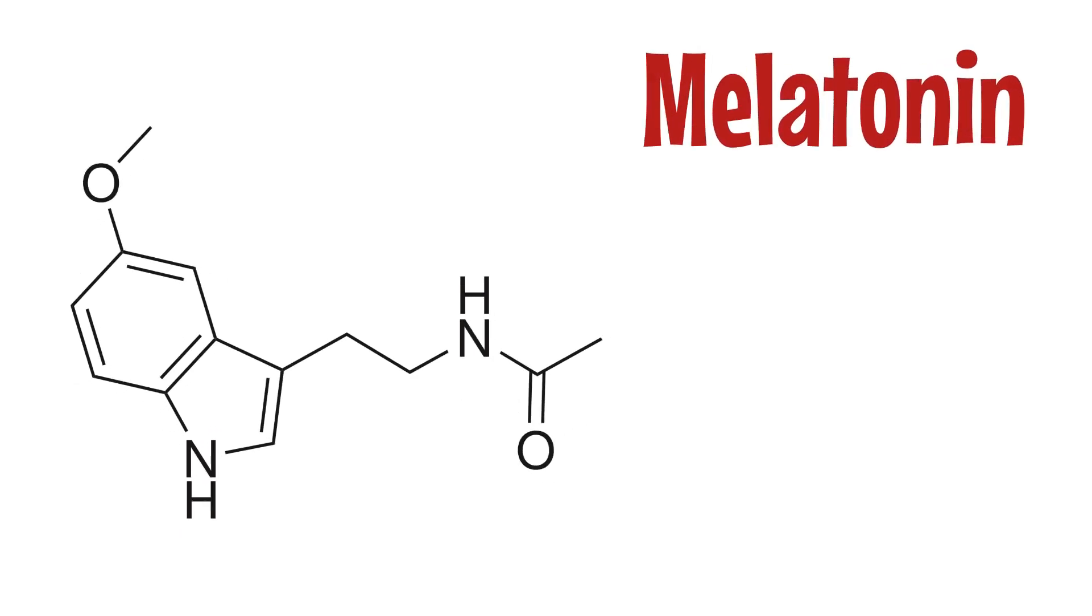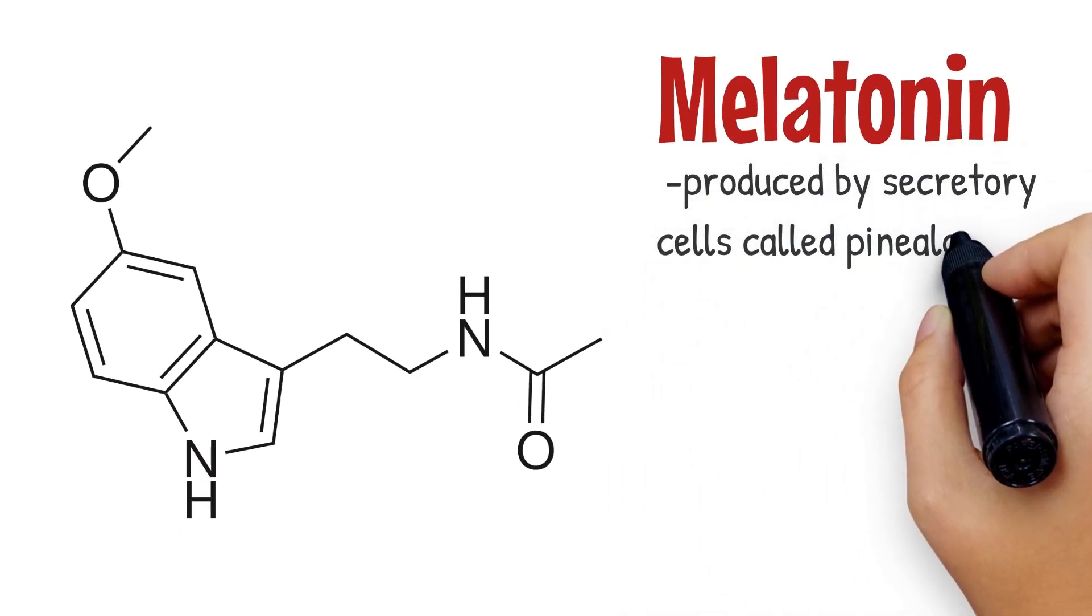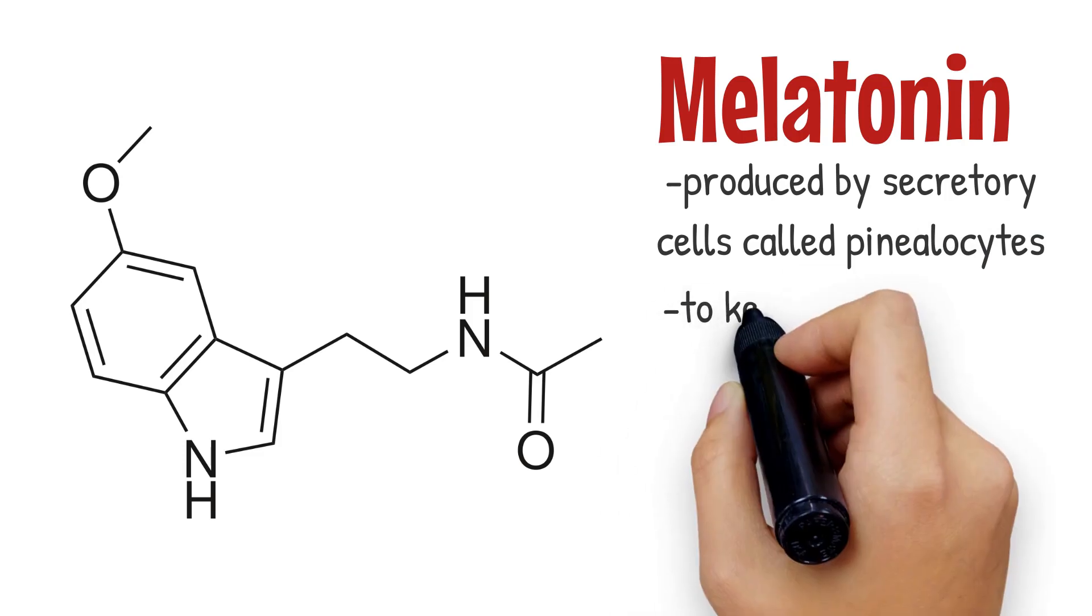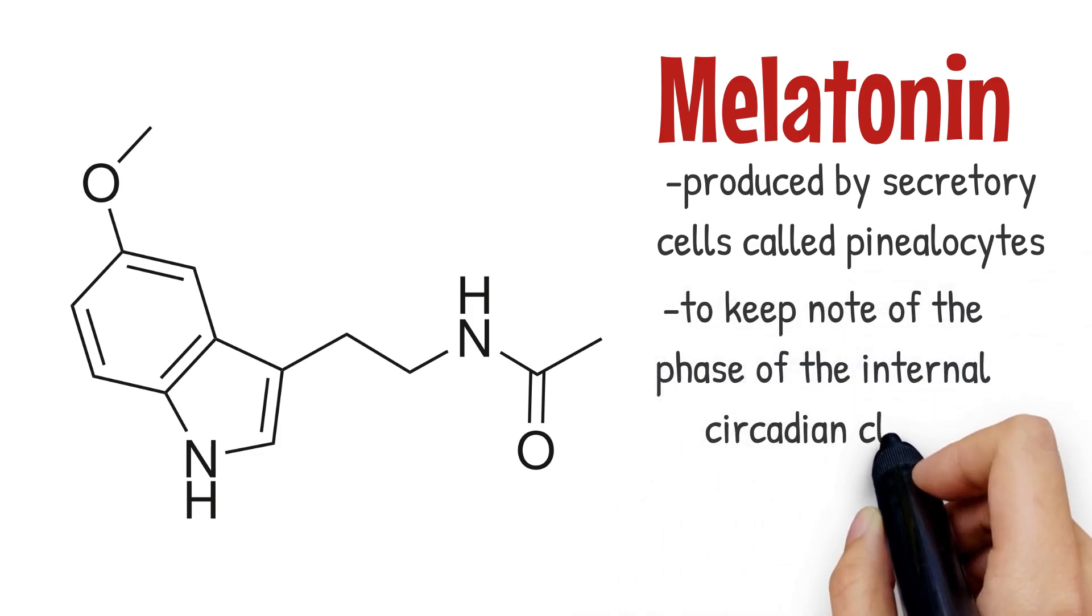The hormone melatonin, which is produced by secretory cells called pinealocytes, is predominantly used to keep note of the phase of the internal circadian clock.